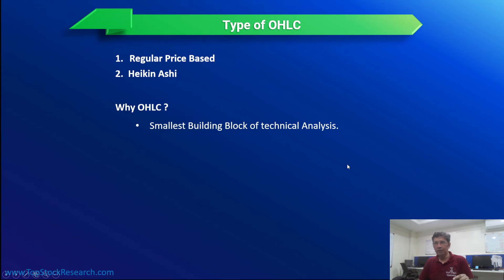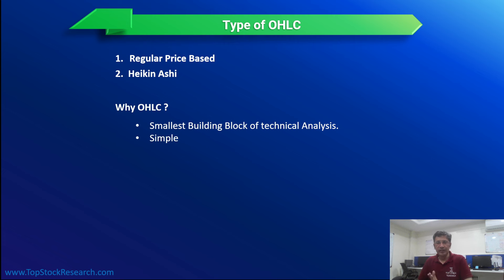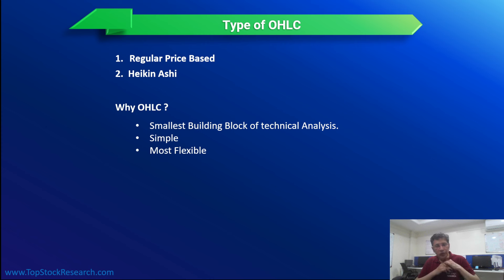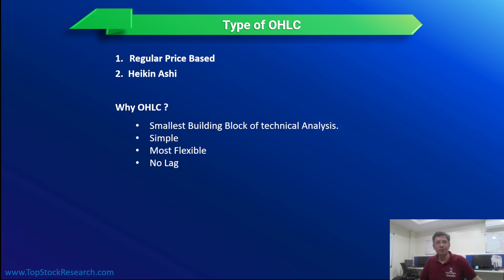Why OHLC? First, it's the smallest building block on which entire technical analysis is built. Second, it's very simple — you just need to see if the candle is red or green, big or small, a doji, a Marubozu, or a long white candle, and you immediately get a sense of market direction. Third, it's very flexible — being the most basic component, it can be used to create lots of complex strategies and patterns. Unlike technical indicators, it has no lag — it reflects what's happening right now. A 50-day moving average, for instance, includes price from 50 days ago which may be irrelevant today due to different news or circumstances. With OHLC, there's absolutely no lag.